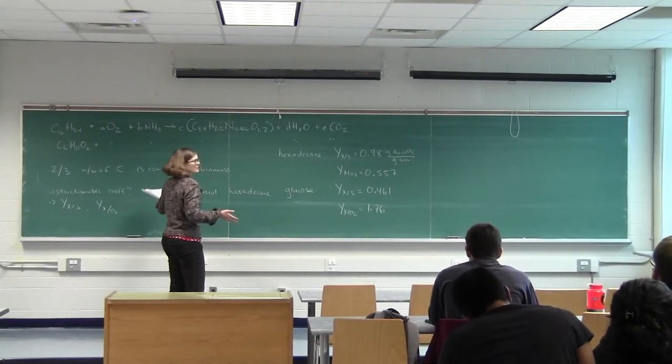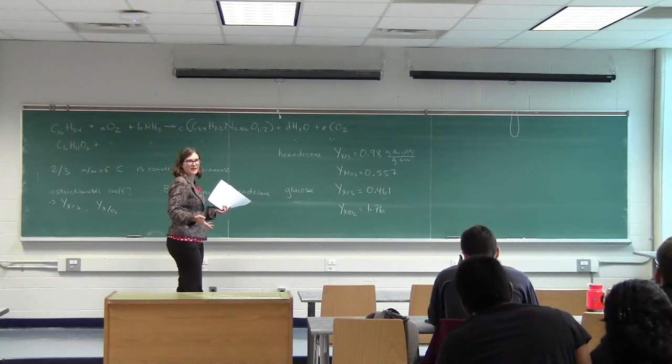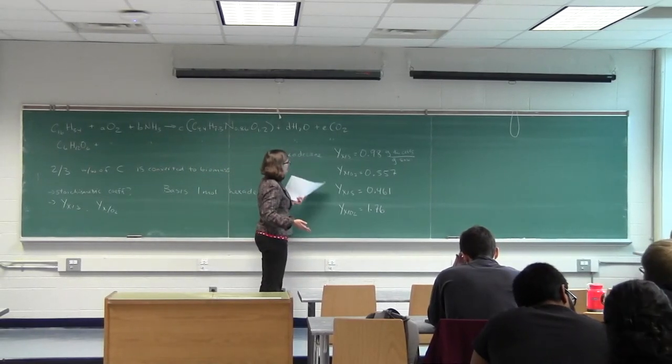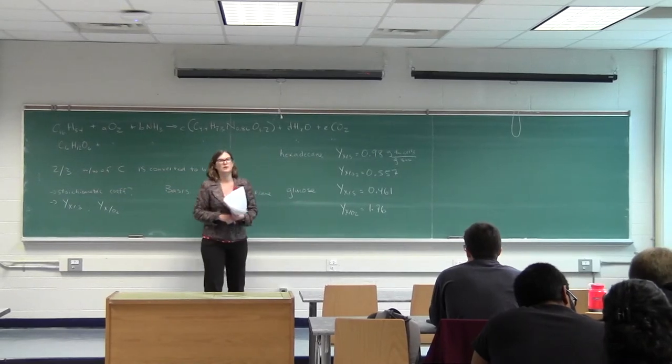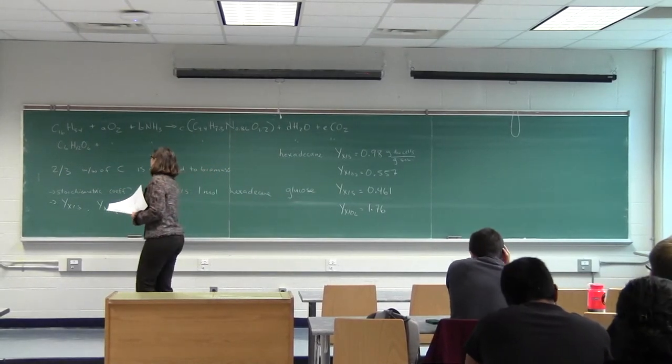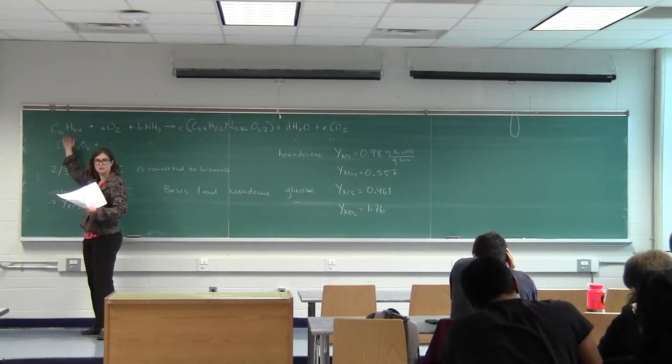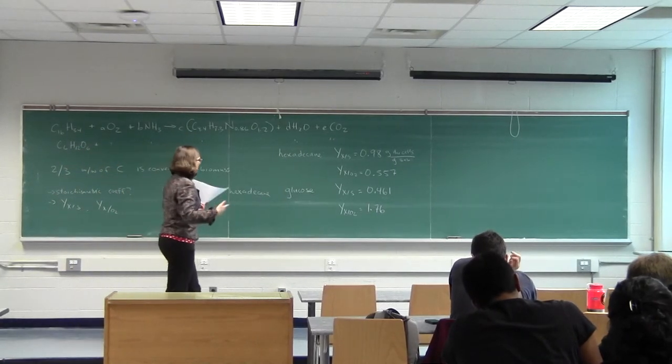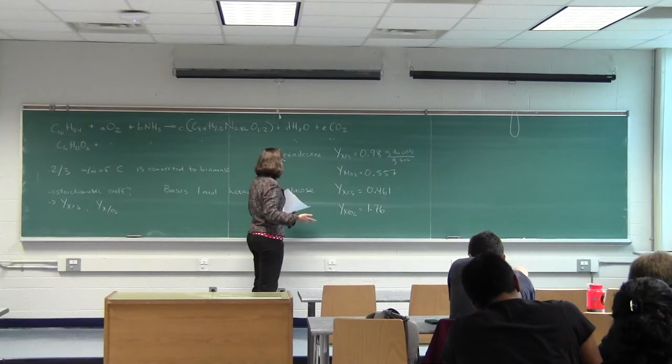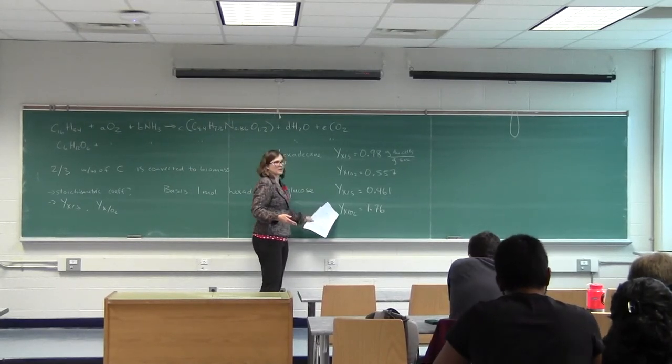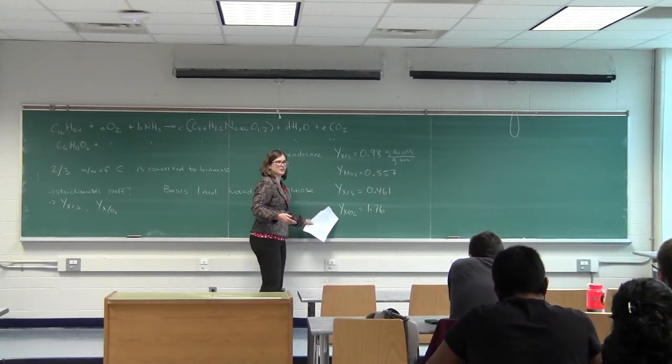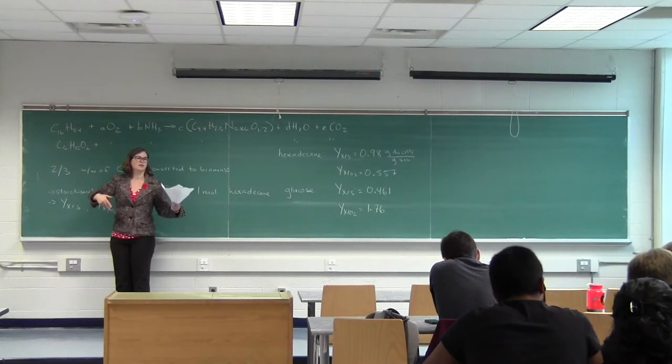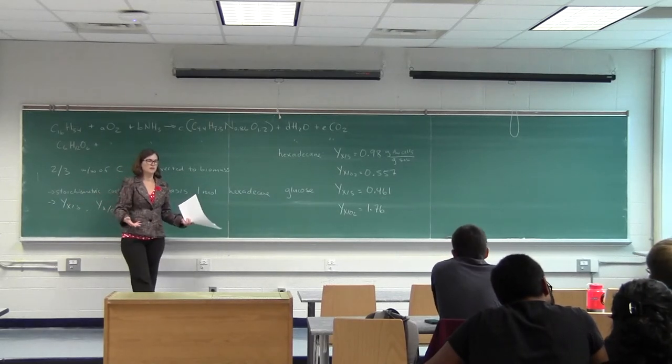I just wrote out the answers for all of this. I didn't make you go through the glucose part, but feel free to do that for practice. For hexadecane, you'll see that the yield is actually significantly higher than it is for glucose. That's because the hexadecane is actually a lot more reduced, so it can be converted more directly into cells. On the other hand, you get a better yield for the amount of oxygen that you put in for glucose, because it's already partially oxidized.